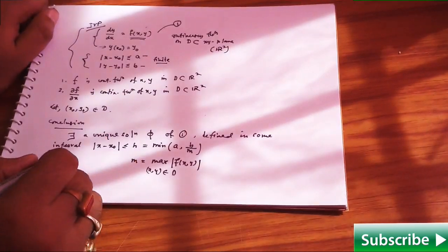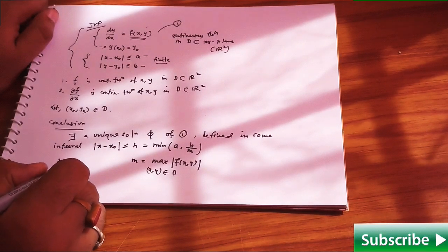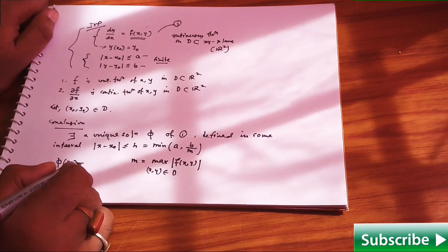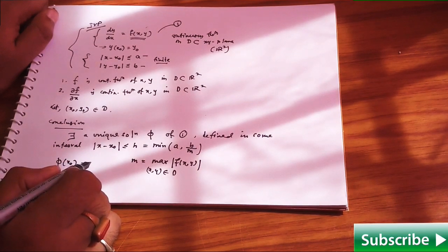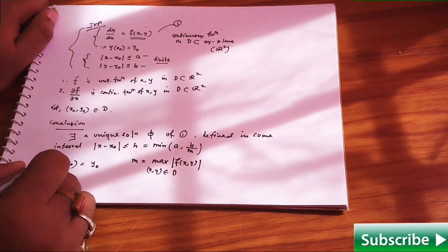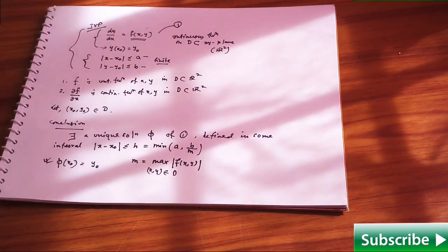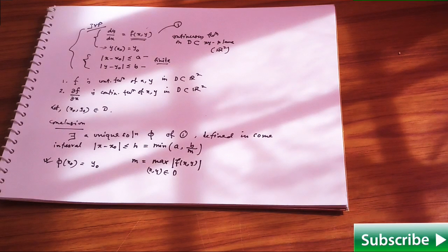And that solution must also satisfy the given initial condition. This was the initial condition, so phi of x naught should be equal to y naught. This will also be satisfied by phi.